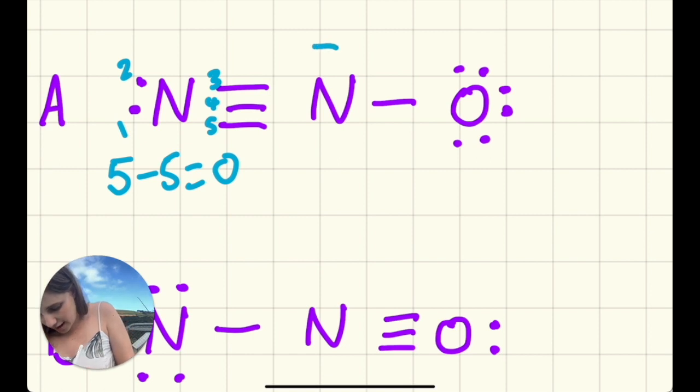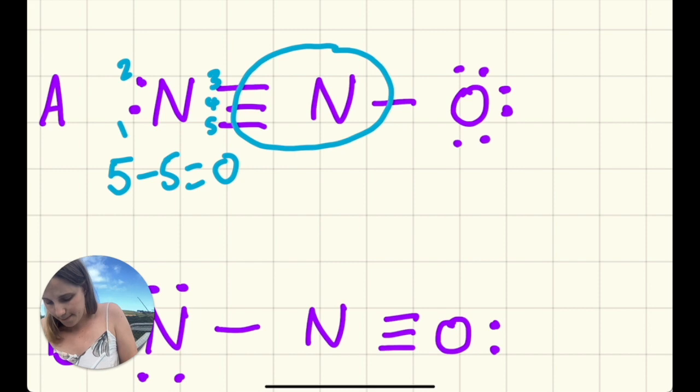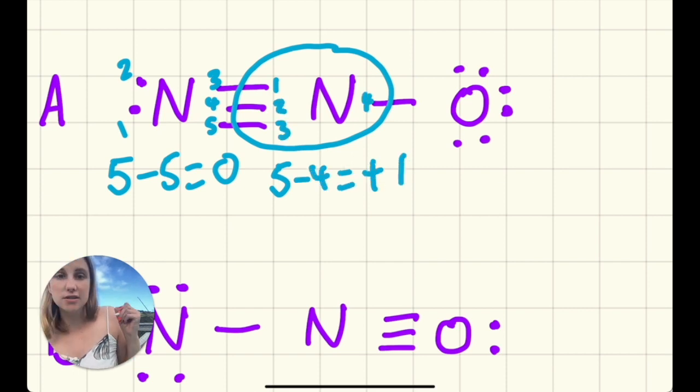Another way of thinking about this is that you're literally putting a circle around the atom that you're looking at. You're taking the number of electrons that it should have according to the periodic table and you're subtracting the number of things inside the circle. So here I've got one, two, three, four things inside the circle, so this gives me a plus one.